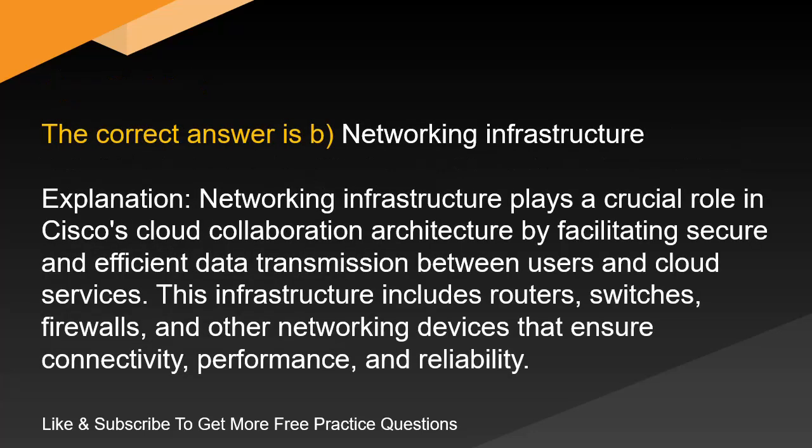The correct answer is B. Networking Infrastructure. Networking infrastructure plays a crucial role in Cisco's cloud collaboration architecture by facilitating secure and efficient data transmission between users and cloud services. This infrastructure includes routers, switches, firewalls, and other networking devices that ensure connectivity, performance, and reliability.